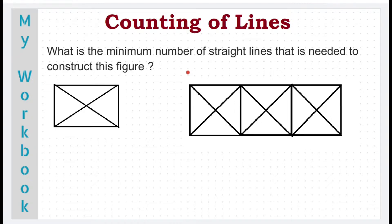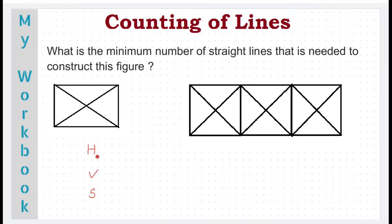And I call that method as HVS — H for horizontal, V for vertical, and S for slanting lines. So for a given figure, we first count only the horizontal lines alone. So let's begin with a very simple figure for practice.